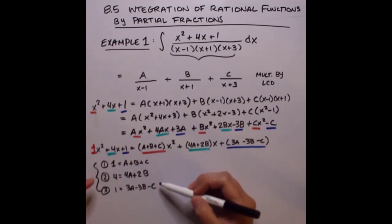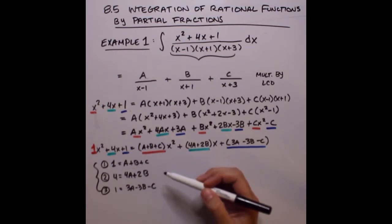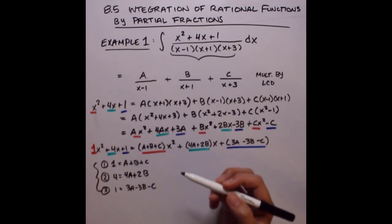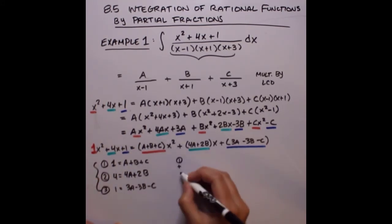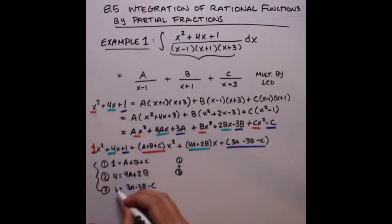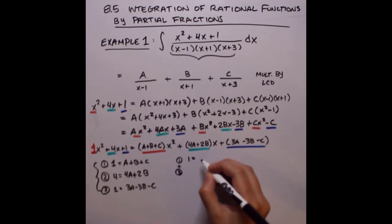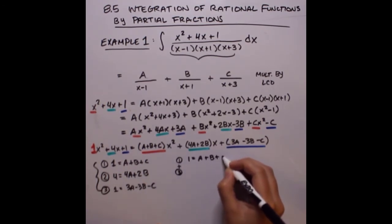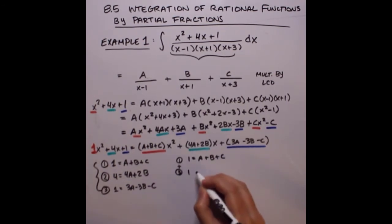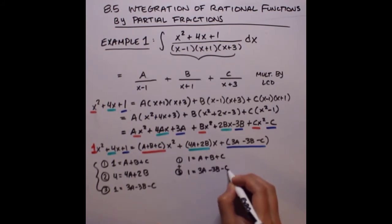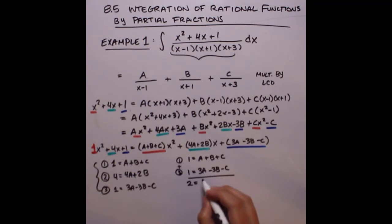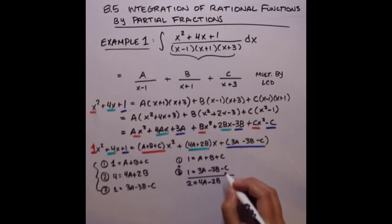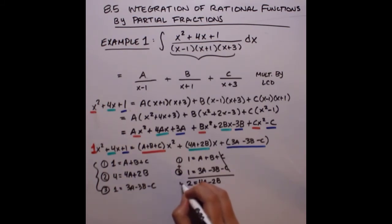For elimination, adding equation 1 and equation 3 works well without any extra multiplication. Equation 1 is 1 = A + B + C, and equation 3 is 1 = 3A minus 3B minus C. Adding them: 2 = 4A minus 2B, with the C terms canceling. Call this equation 4.